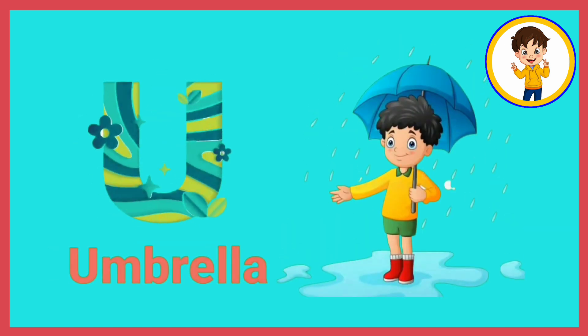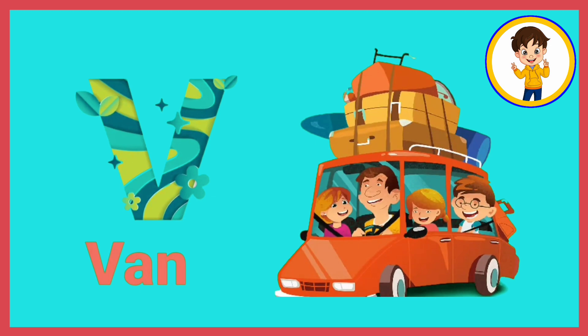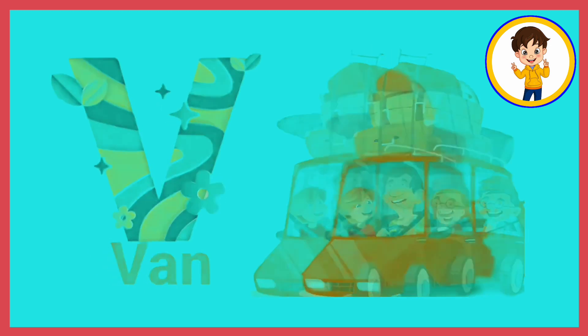U. U for umbrella. Umbrella means chatri. V. V for van. Van means van.